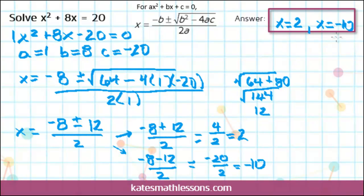It'll also work if I plug in the negative 10. So with a quadratic, you usually end up with two different answers. Every once in a while, you get the same answer repeated twice, or sometimes there's no answer at all. But in this case, our two answers are 2 and negative 10.